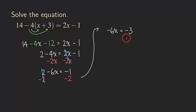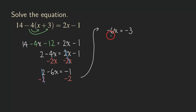So now what happens next is that we are going to divide both sides by negative 6 so that we can get rid of the number in front of the x. Because we're solving for x, I don't really want to turn this into a 0 — I actually want to turn this into an x.